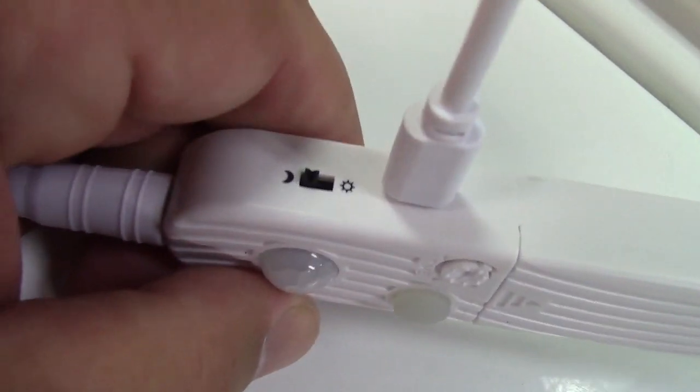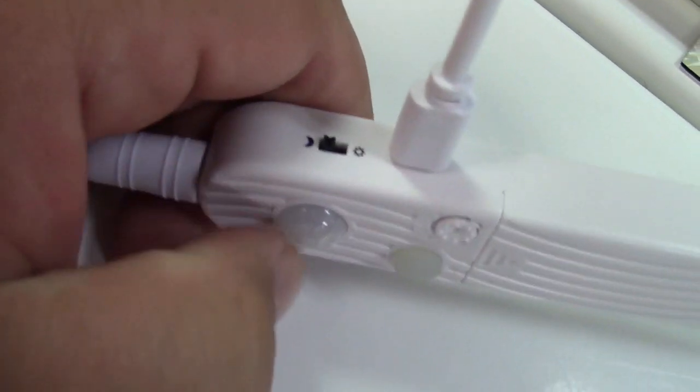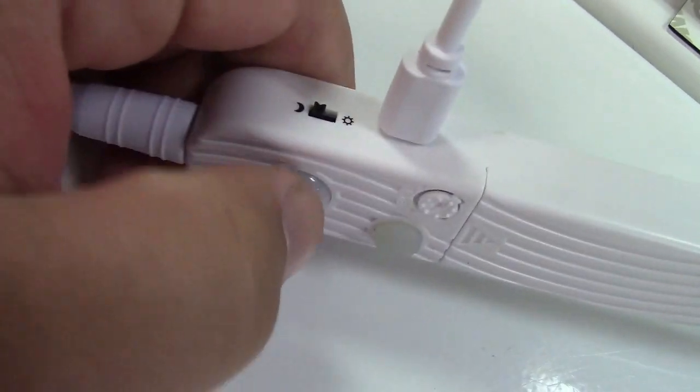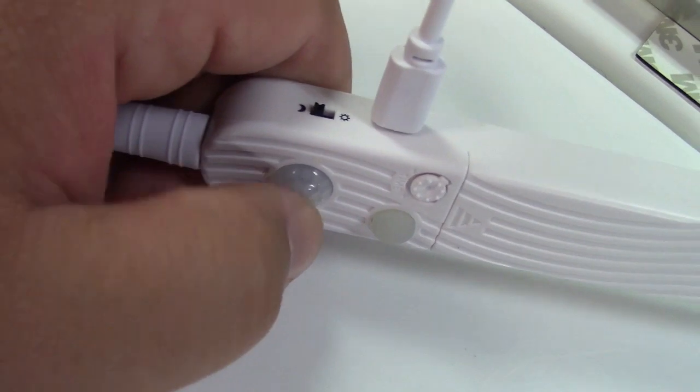And you can adjust the time that it stays on for. There's a switch on the side here which allows you to select whether or not the motion sensor works only in darkness. Or if you flip it the other way, it'll work when it's already light in the room if you just need more light.